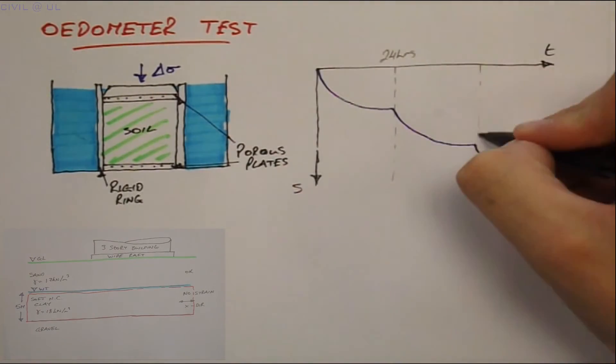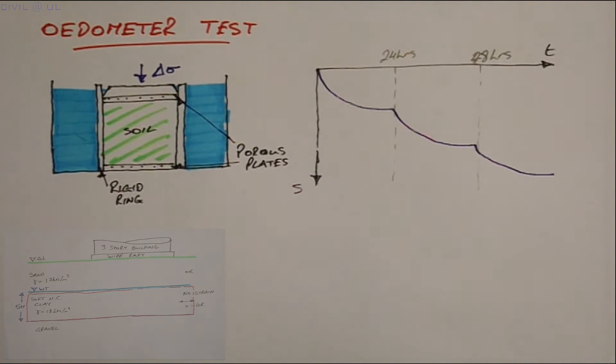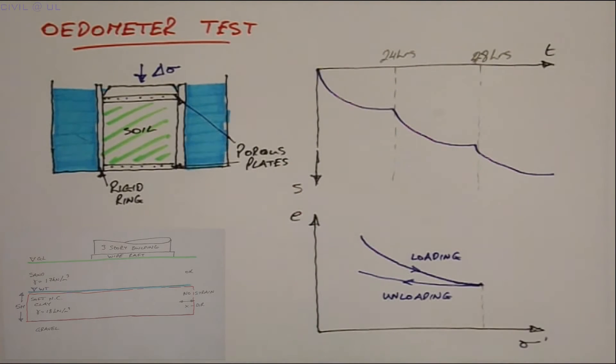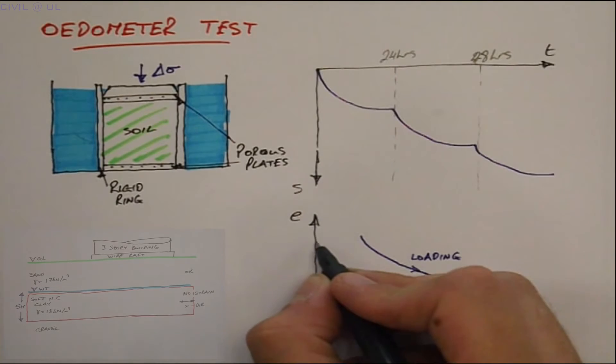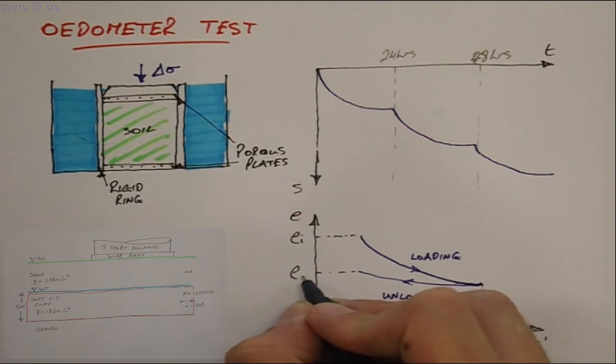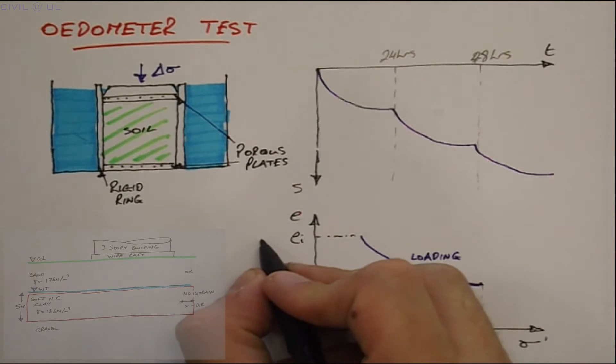Typically, this takes 24 hours. The loading process continues until the specimen is subjected to a stress well in excess of that to be experienced in the ground. The resulting void ratio versus applied stress plot looks like this. Note that the steepness of the plot reduces as the applied stress increases, and also when fully unloaded, the final void ratio is much less than the initial value.